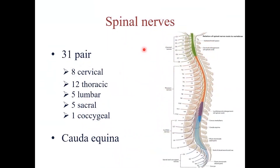Each segment of the spinal cord gives two pairs of spinal nerves which exit from the intervertebral foramina of the corresponding vertebral level. But because the vertebral column grows longer than the spinal cord, each spinal cord segment is higher than the corresponding vertebra, and this difference becomes more obvious distally towards lumbar and sacral segments. For example, lumbar spinal cord segment 5 is at the level of the first lumbar vertebra. Therefore, lumbar and sacral spinal nerves must travel through the vertebral canal and, being farthest from their intervertebral foramina, they are the longest and form a bundle called the cauda equina.